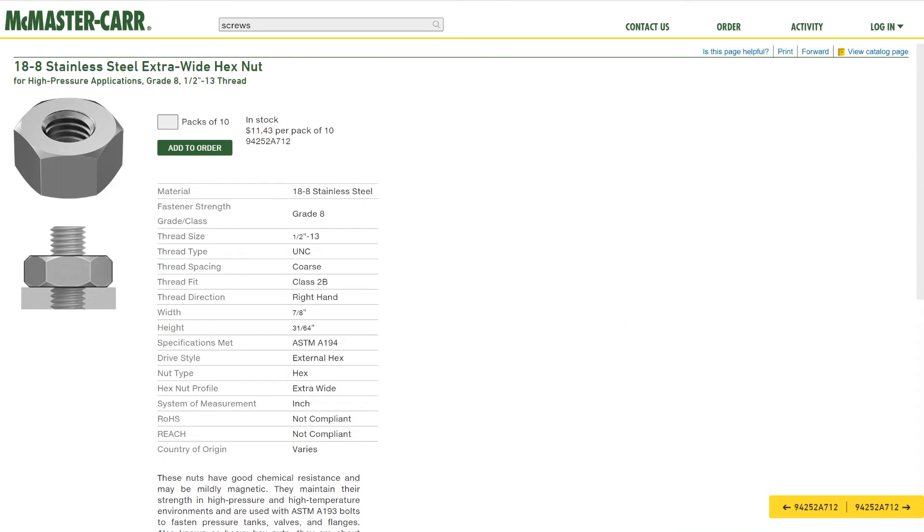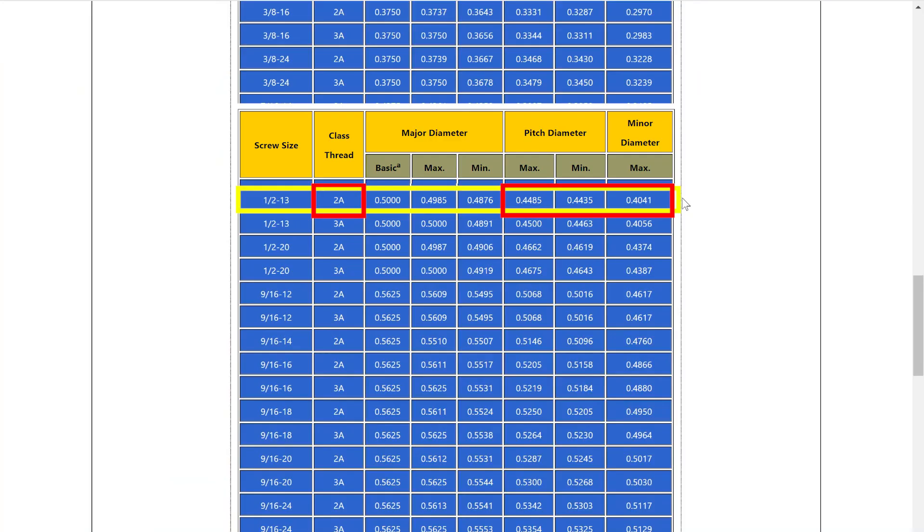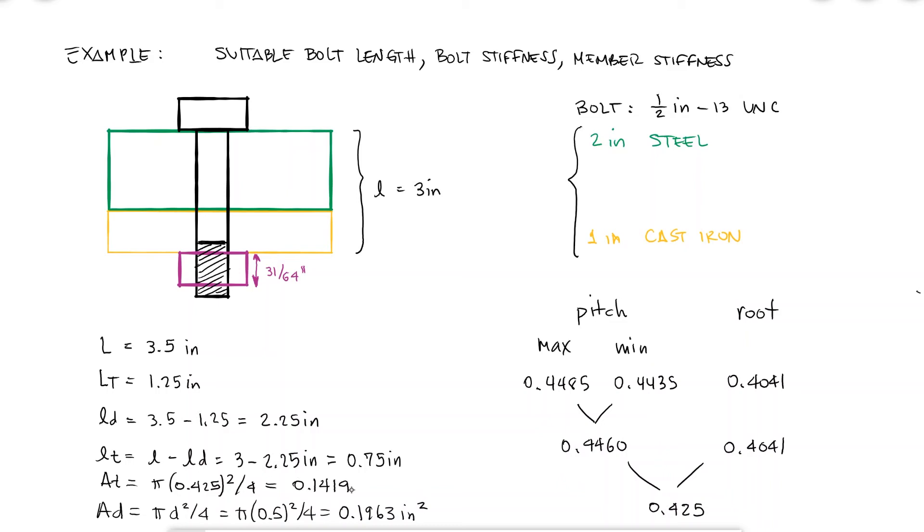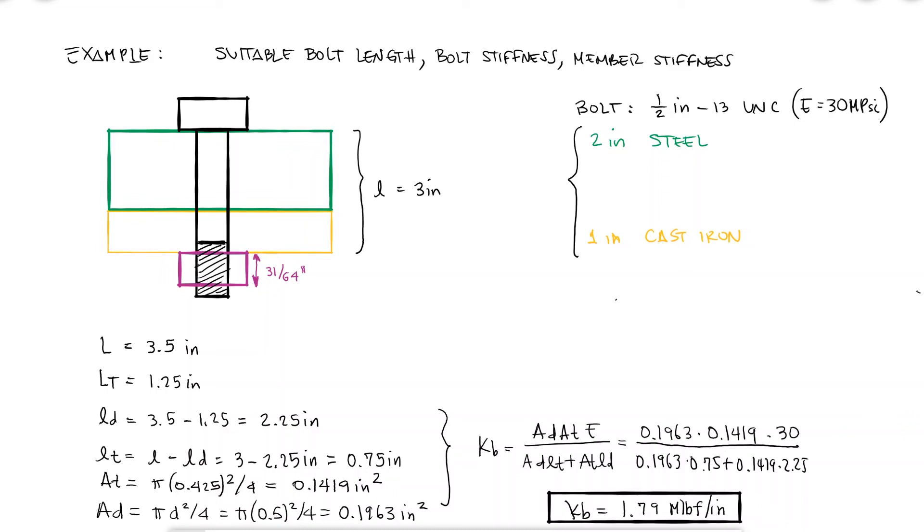And by looking up the root diameter and the pitch diameter for a 1/2 inch-13 with a class 2 thread fit, I can find a value for AT of 0.1419 inches squared. I would use these values for my bolt stiffness expression.